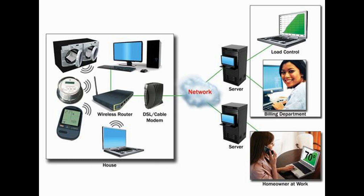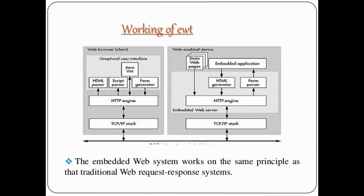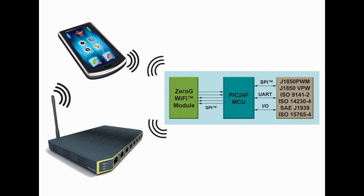Embedded systems contain processors, software, input sensors and output actuators, which work as the controls of a device and are subject to constraints. These embedded systems may not have disk drives, keyboards, display devices and are typically restricted in terms of power, memory, GUIs and debugging interfaces. The central building blocks are microcontrollers, that is microprocessors integrated with memory units and specific peripherals for the observation and control of these embedded systems.